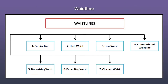The different types of waistlines can be the empire line, high waistline, low waistline, the cummerbund waistline, drawstring waist, paper bag waist, or cinched waist.